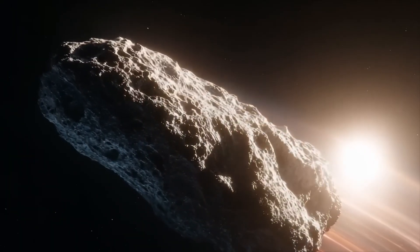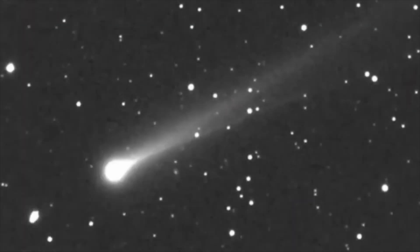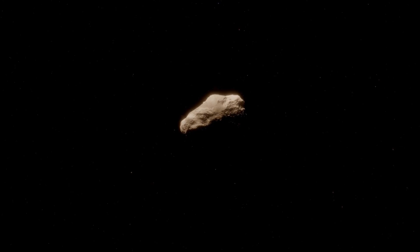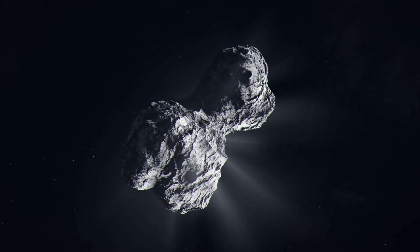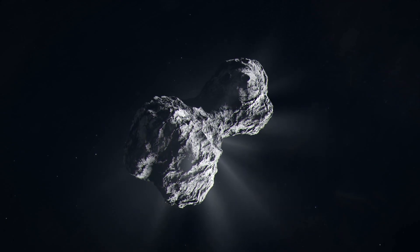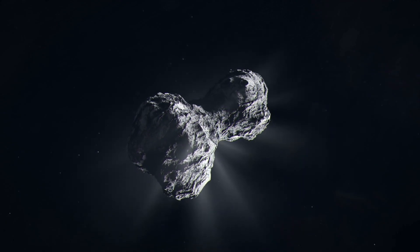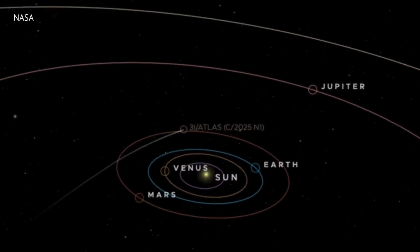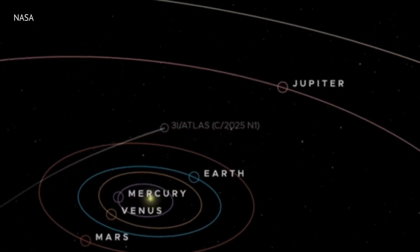Some researchers whisper about the seeding hypothesis—the idea that 2I/Borisov isn't just a visitor, it is a farmer. As it passes through, it spreads organic compounds or microscopic sensors across the orbital paths of our planets. It is a quiet, efficient way to colonize or monitor a system without ever making a sound.